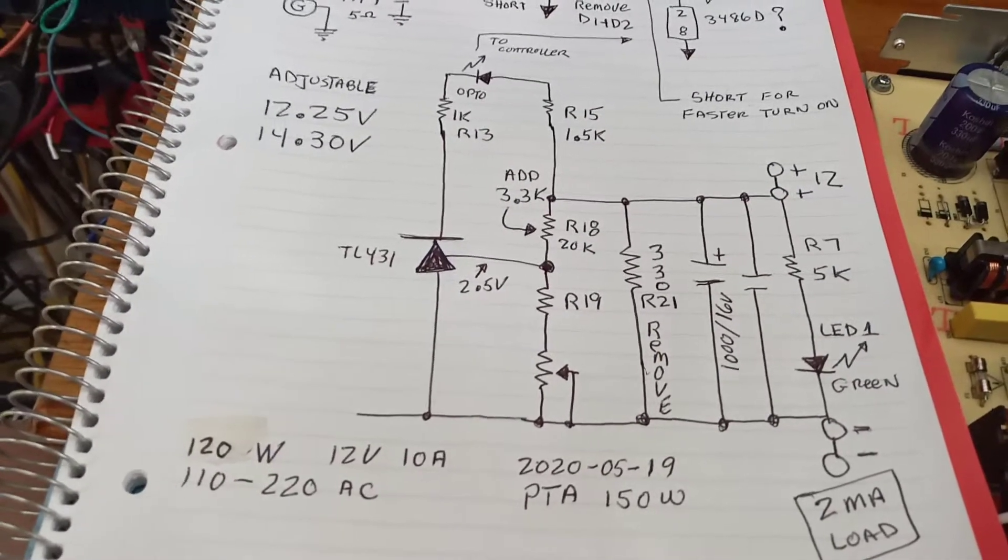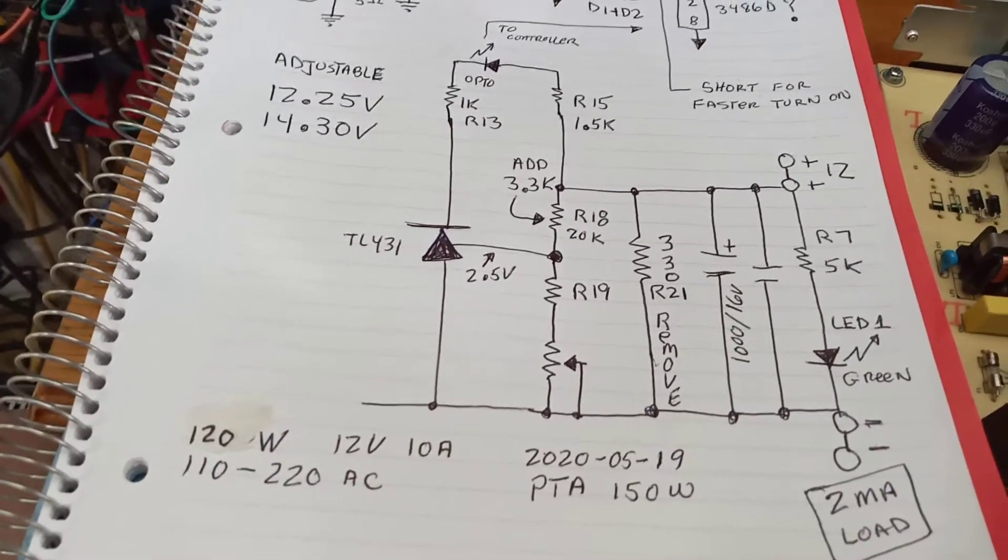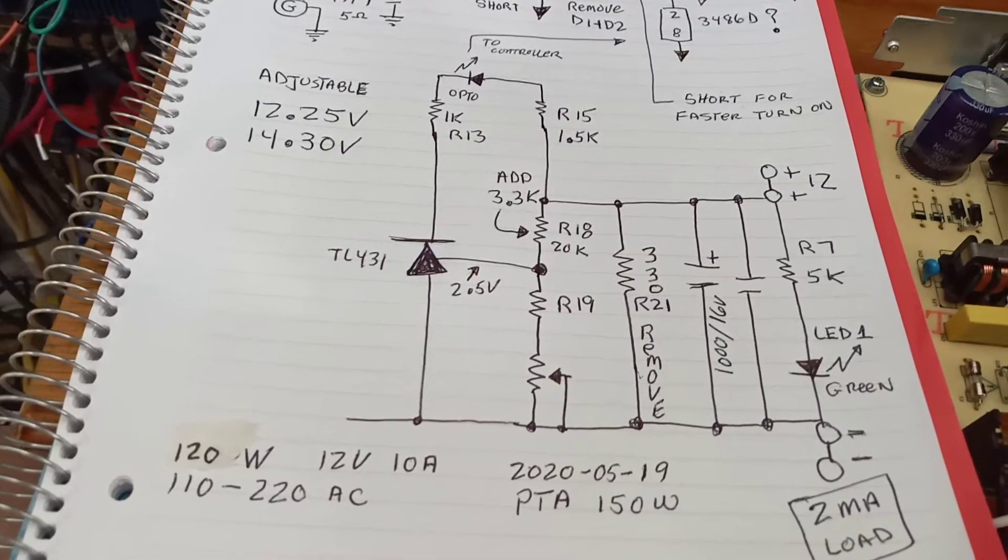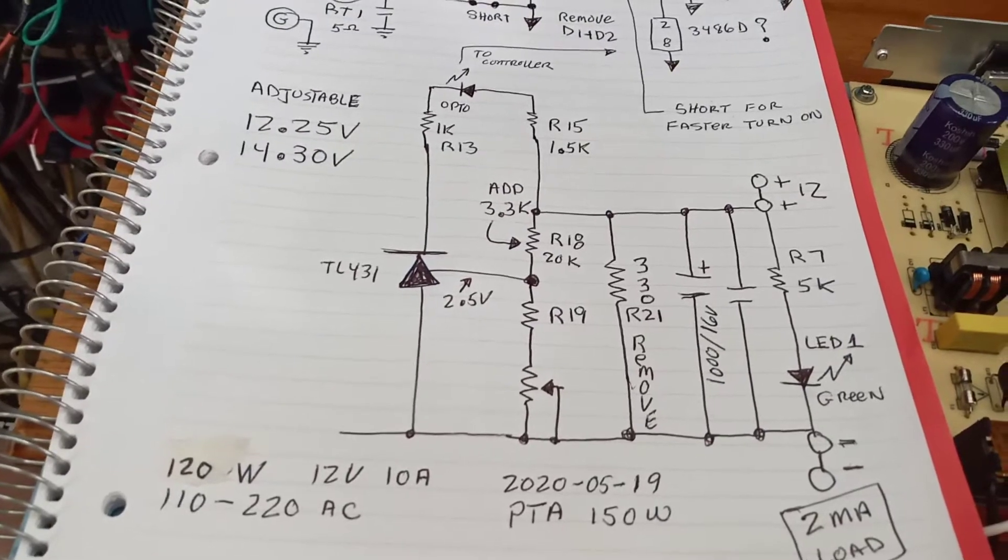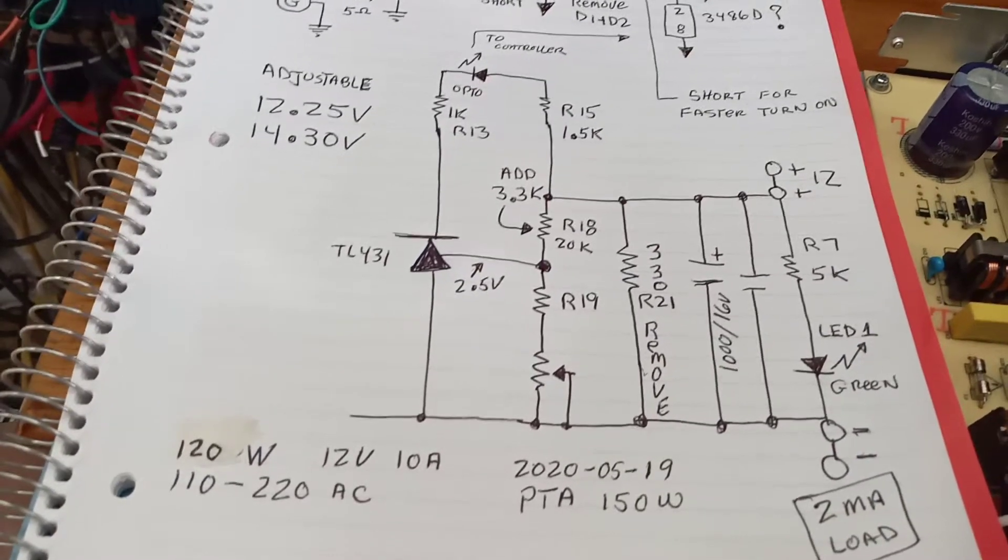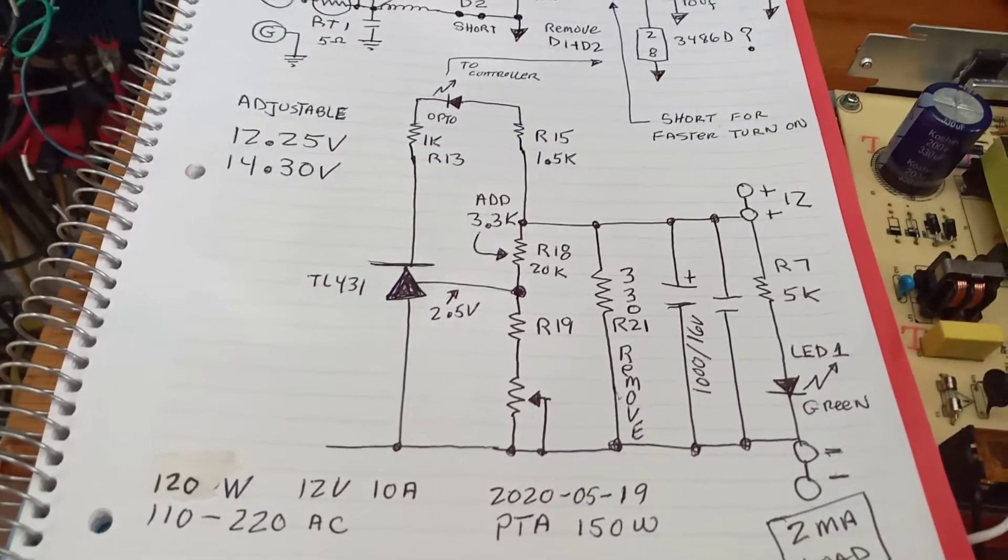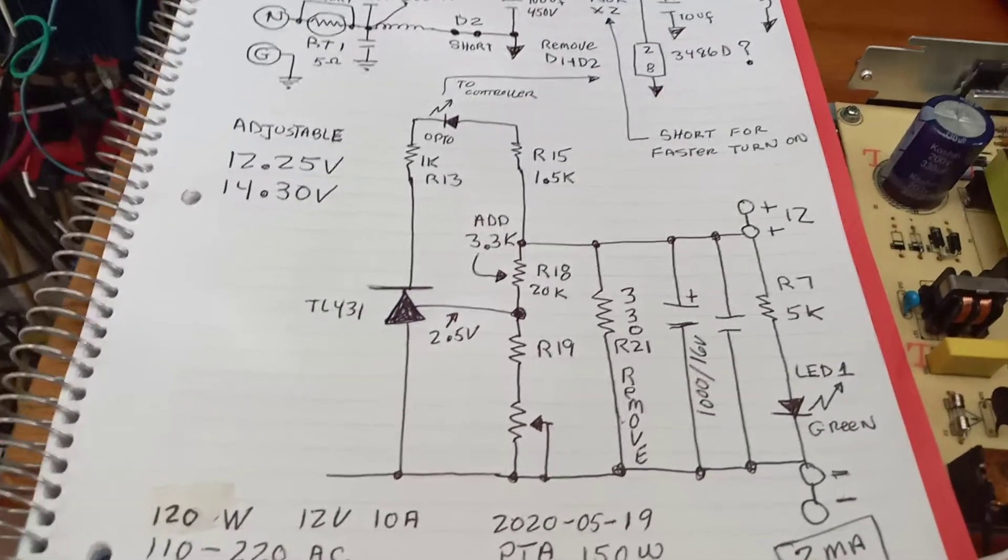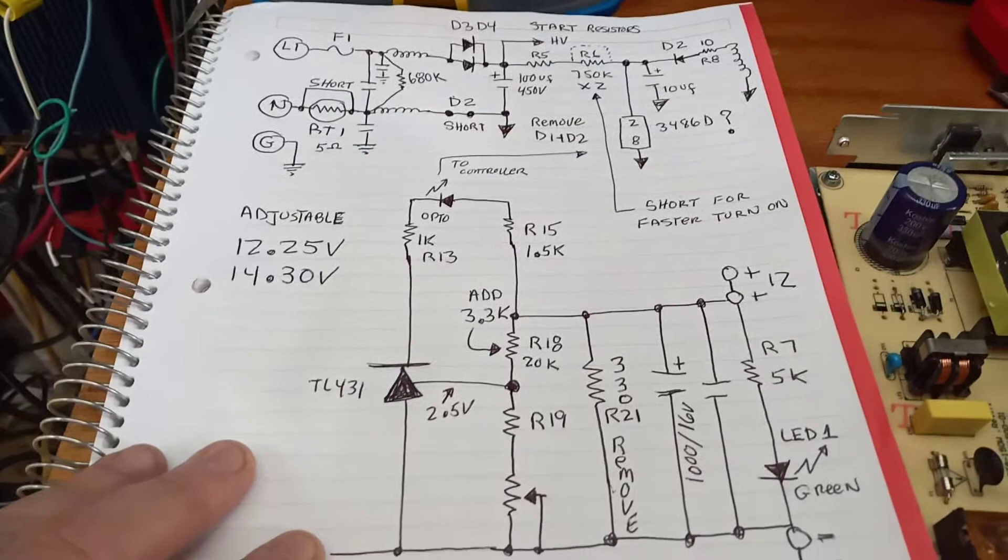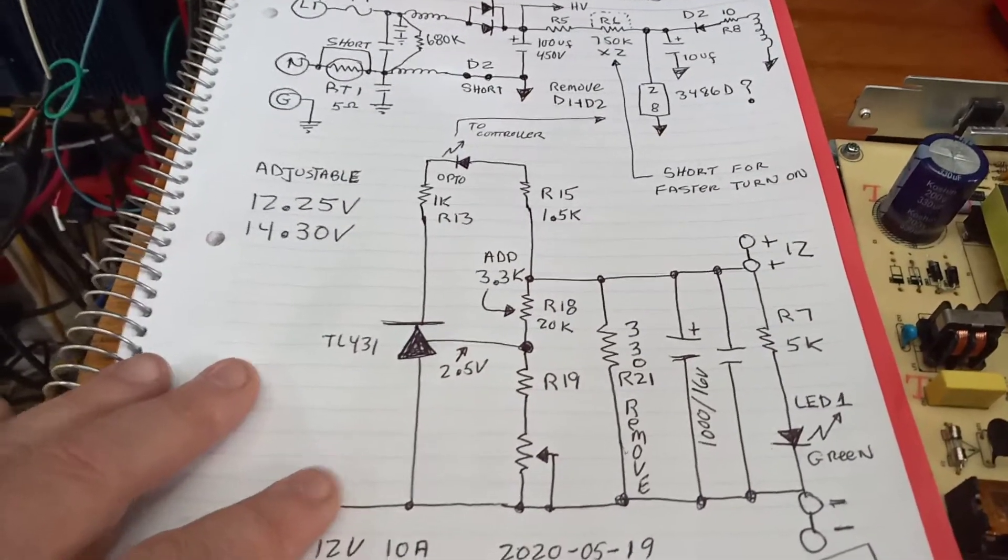These are 120 watt 12 volt 10 amp 110-220 and they're listed as LED power supply, so they power right at 12 volts because that's where you want to do it. It'll go down to 11 something and up to close to 13, but it's an easy modification.